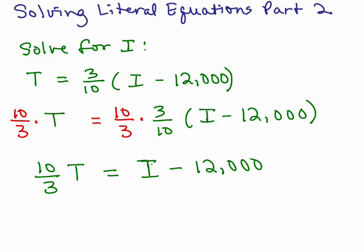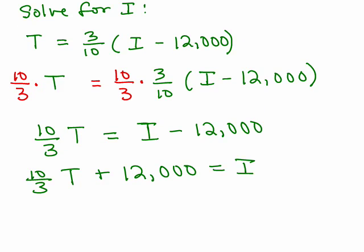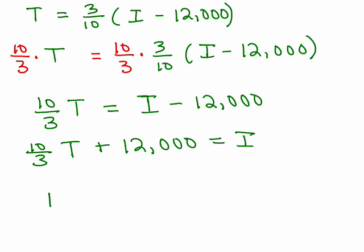You don't need the parentheses anymore. Now I'm trying to solve for I. So we have I minus something so what we could do is add 12,000 to both sides to isolate I. So this gives you 10 thirds T, and if I add 12,000 to both sides and solve for I this is what I get. Lastly I would suggest you write the I on the left-hand side. So we have I equals 10 thirds T plus 12,000, so I've solved for I.